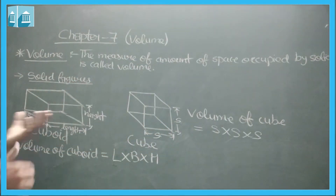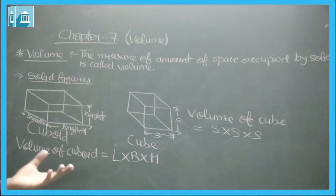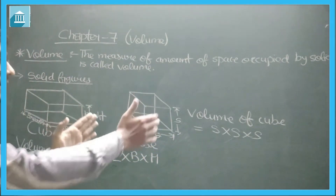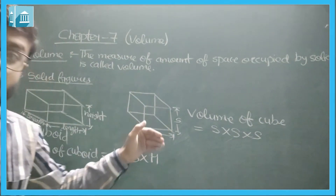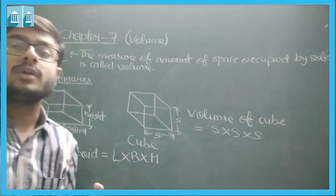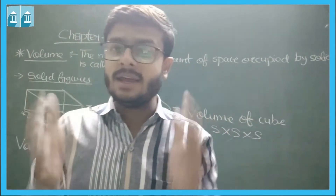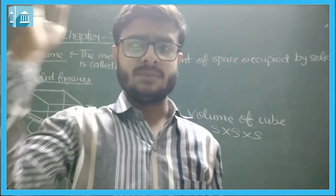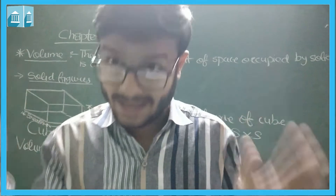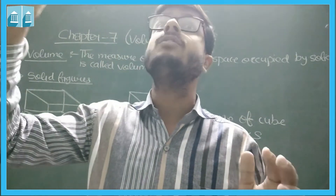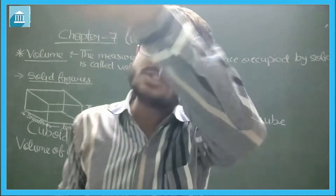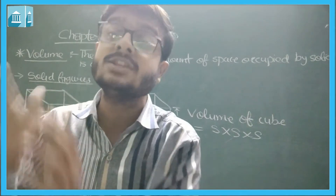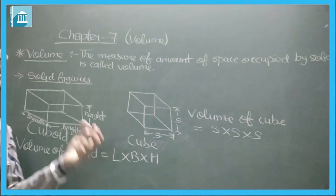There are two types of solids we will study: cuboid and cube. These solid figures have space inside them. For example, this room is the shape of a cuboid — the space occupied by air inside it is a three-dimensional space, and that measurement is called volume.